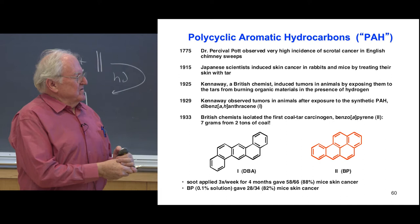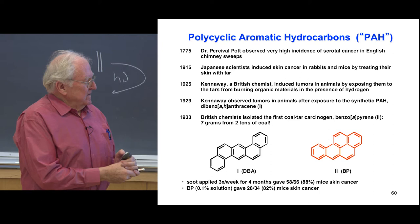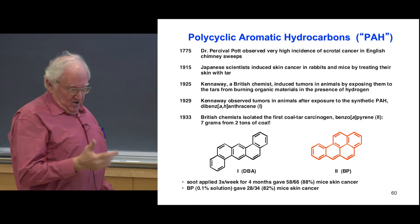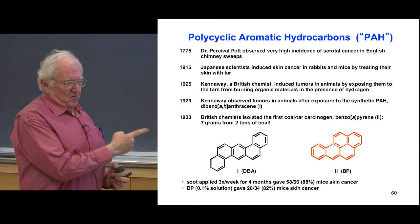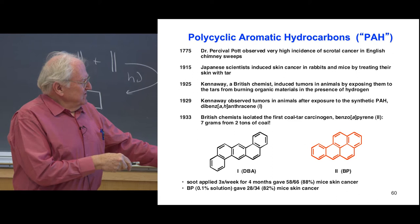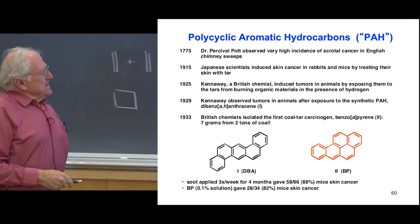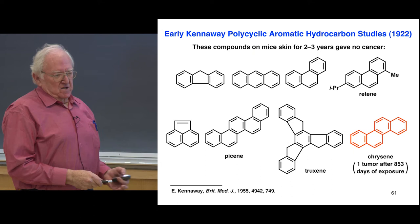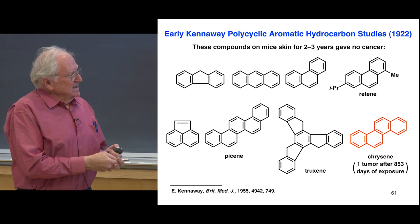Here are some of the other compounds that Kennaway had in the laboratory. None of these did anything to the mice — it's only certain arrangements of benzene rings that are carcinogenic. These are not carcinogenic. This one is marginally carcinogenic — it took a long time to get one tumor in a whole bunch of mice.